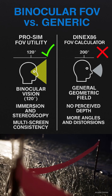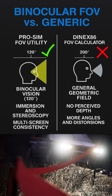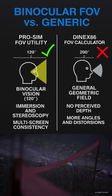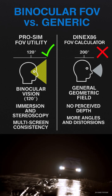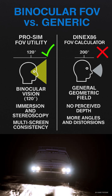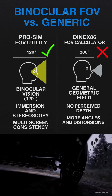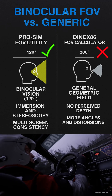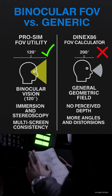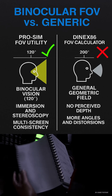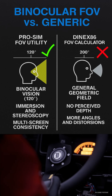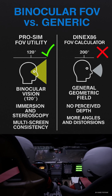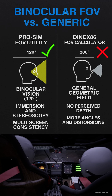A correctly set FOV ensures that objects in the game appear at the correct size and distance relative to your real-world perspective. This can significantly improve your spatial awareness on the track, allowing for better judgment of corners, braking points, and overtaking opportunities.